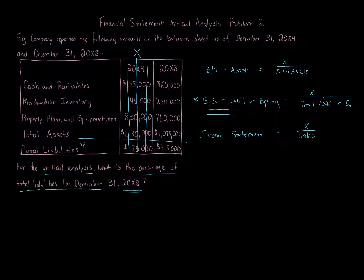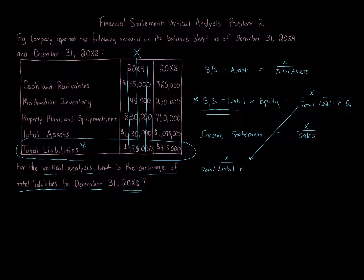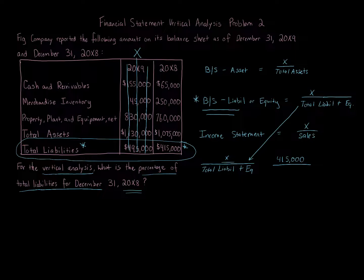We're using $415,000 for 20x8 total liabilities. The specific item goes over total liabilities plus stockholders' equity. We're asked about total liabilities, so x equals total liabilities for 20x8, which is $415,000, placed over total liabilities plus stockholders' equity. Looking at the items — cash and receivables, merchandise inventory, property plant and equipment, total assets — there's nothing showing equity directly.